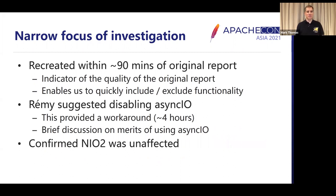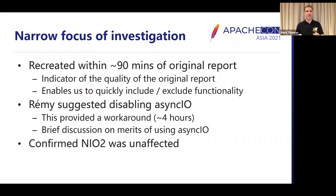The first thing we did was recreate the issue, and we were able to do that within 90 minutes of the original report landing on the user's mailing list — really quick, a good indicator of how good the original report was. Because we can recreate it, we can include and exclude functionality quite quickly to narrow down where we need to look. One of the things Remy suggested was to try disabling the asynchronous I/O. When we did that, the problem went away — a helpful workaround for the user, and it also helps us focus on where the error is likely to be.